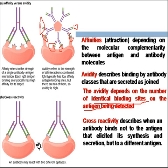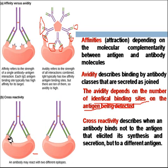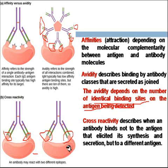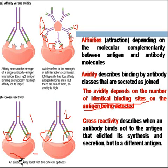Another property of antibody molecules is cross-reactivity. This describes when an antibody molecule binds not to the antigen that elicited its synthesis and secretion, but rather binds to a different antigen. This may be due to some morphological similarity in the antigen binding site. As you can see, although these sites are somewhat different, some similarity may be responsible for cross-reactivity — where an antibody generated in response to one antigen instead binds to a second antigen. This is known as cross-reactivity.